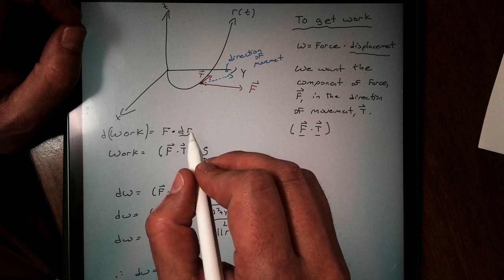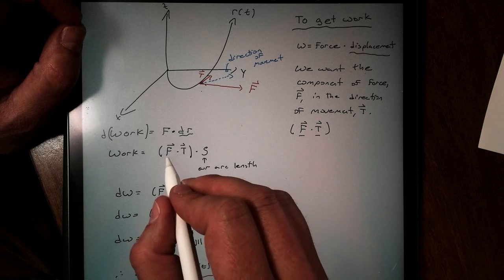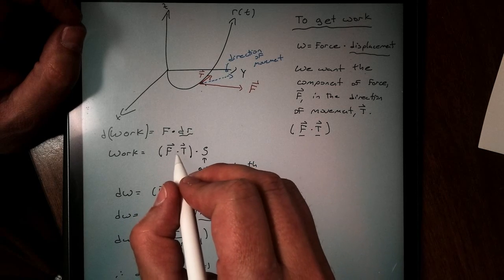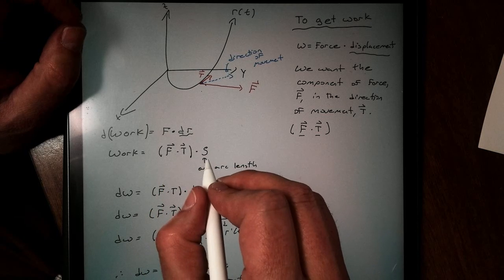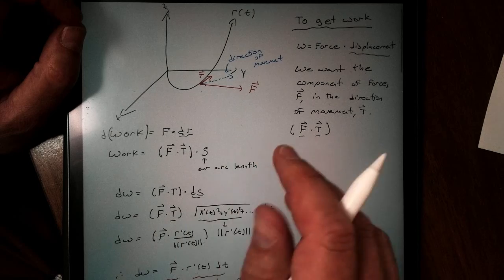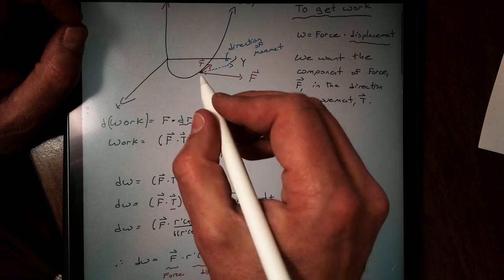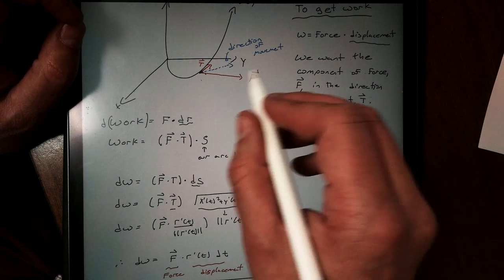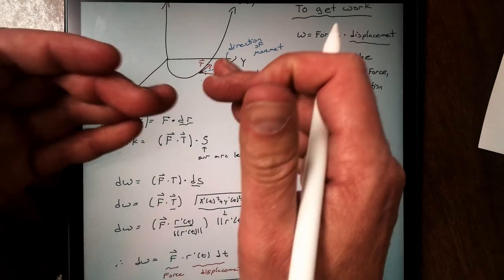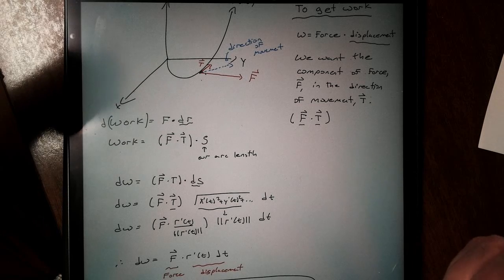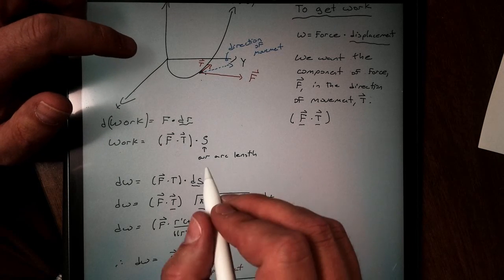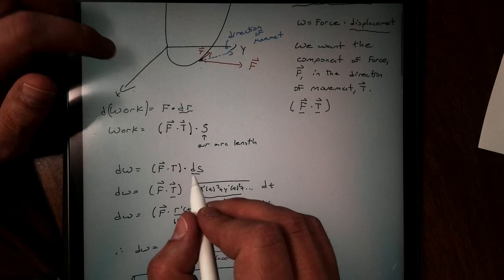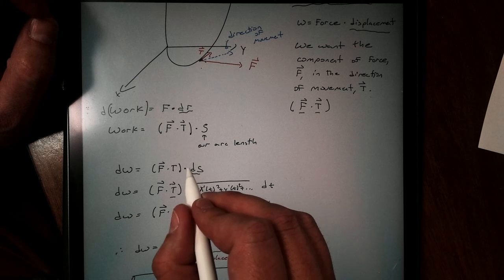And as a result, I can write our work equation, instead of F dr, it's F dot t times s. Notice I say dot because we are multiplying these together. Now s, you might recall this as being our arc length. So now we've converted our displacement, our work equation, to dealing with the length of our curve versus the displacement that we've removed. And if we let s get really small, we get ds. This is that really tiny change in our arc length.